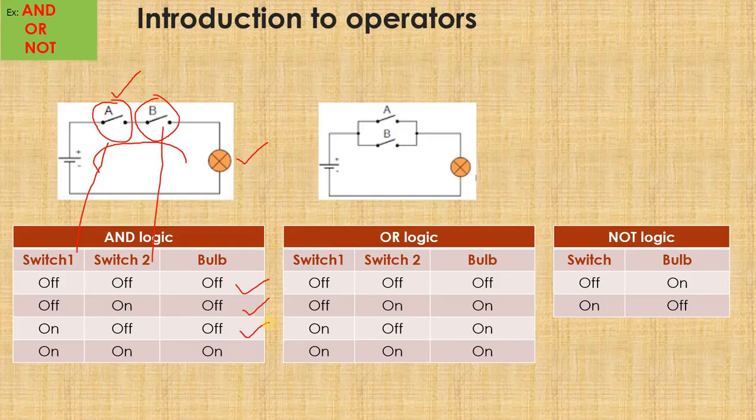And the final case is, when both the switches are closed, when both the switches are ON. So that means, I will be able to make my bulb to glow. So such kind of a logic, I call it as AND logic.